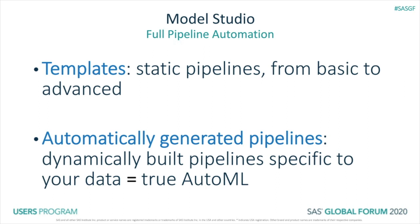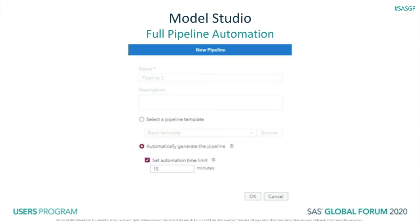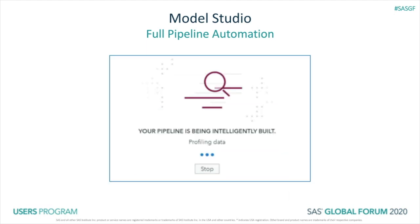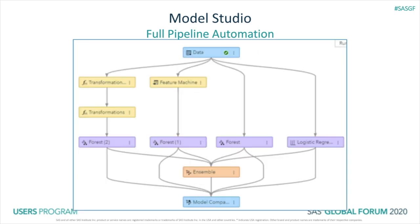This is using the REST API under the covers that I will be talking about more shortly. So now in Model Studio, when adding a new pipeline to your project, you can select this option to kick off this process that takes the static templates a step further. It attempts various data preprocessing, feature engineering and selection, and different model types, including ensembles of models, to find the optimal pipeline. A pipeline with the top five branches that lead up to a supervised learning node is generated for you, like the one shown here.